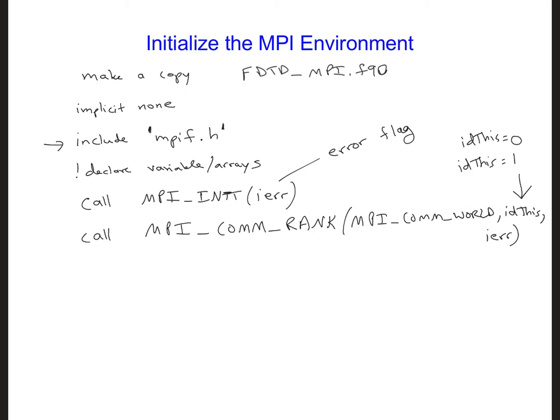Lastly, type call MPI_COMM_SIZE. And here again we're going to have MPI_COMM_WORLD, so all the processors, num_p and the error flag again.